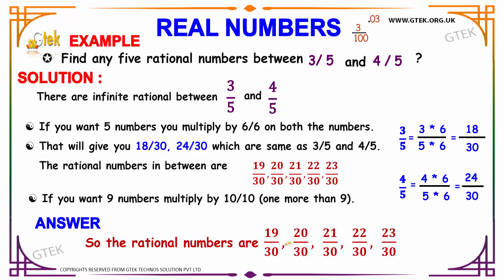So the rational numbers are 19/30, 20/30, 21/30, 22/30, and 23/30.